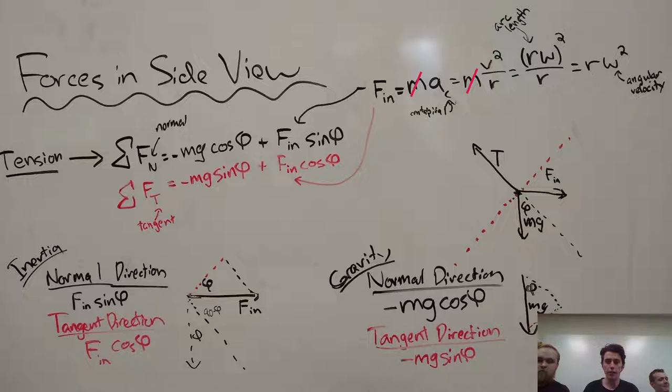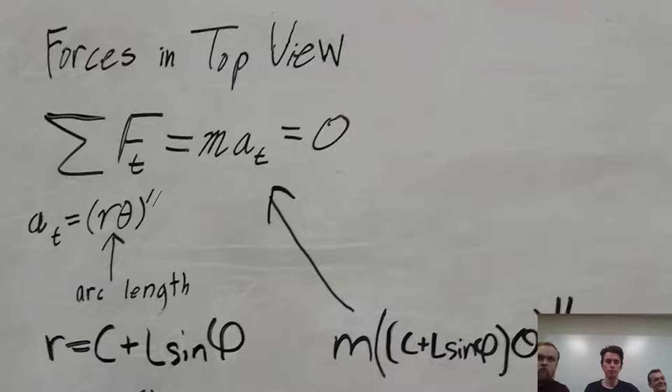We were able to find the components of the weight, mass times gravity, and the force of inertia, mass times the centripetal acceleration, or as we found, radius times the angular velocity squared. The sum of the tangential forces, we will now dive into deeper in a couple slides.